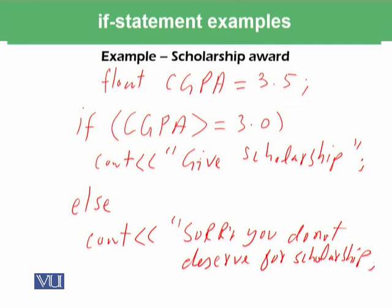What do you think would be the output of this program if it is executed in an online C++ compiler? As the CGPA is 3.5, it will come to this instruction. 3.5 is greater than or equal to 3, condition is true, so it will output give scholarship. The message sorry, you do not deserve the scholarship will only be displayed if this float variable contains a value less than 3.0.